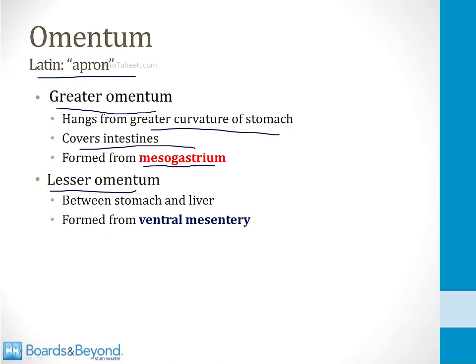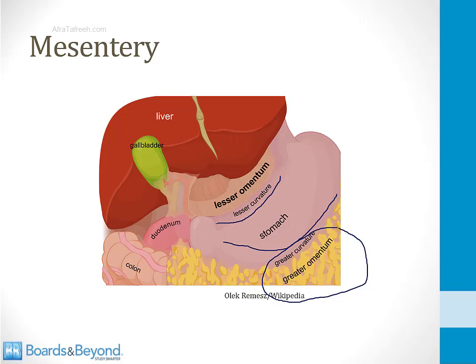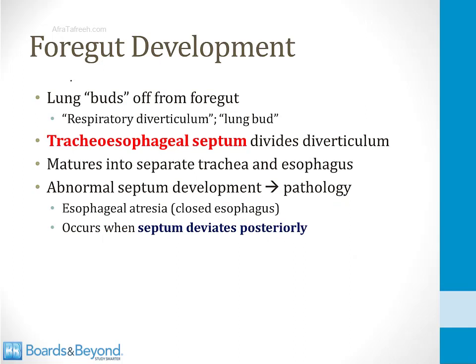The lesser omentum connects the stomach and liver and is formed from ventral mesentery — a high-yield fact. The greater omentum hangs from the greater curvature of the stomach like an apron, and the lesser omentum is a much smaller structure. Now we'll discuss each of the three sections of the embryonic gut tube — the foregut, midgut, and hindgut — and the important anomalies to know for Step 1.